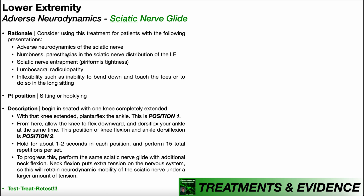Number two: numbness or paresthesia, such as tingling, burning, or shooting pain in the sciatic nerve distribution of the lower extremity. Number three: sciatic nerve entrapment. The most common site of entrapment is the piriformis muscle. The sciatic nerve runs directly below the piriformis muscle in the vast majority of individuals, and in a smaller percentage it actually pierces through the piriformis muscle belly. In either case, if the piriformis is tight or spasming, it can cause entrapment of the sciatic nerve leading to neurodynamic hypomobility.